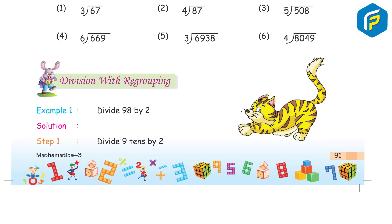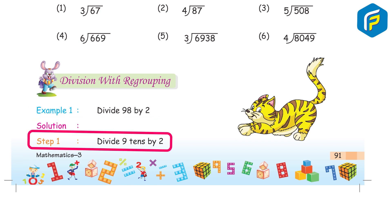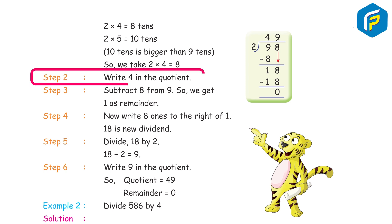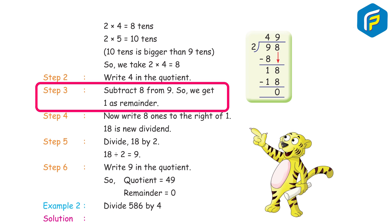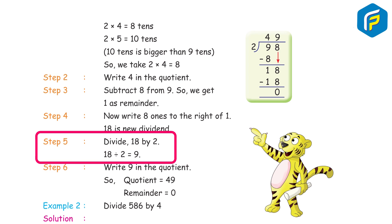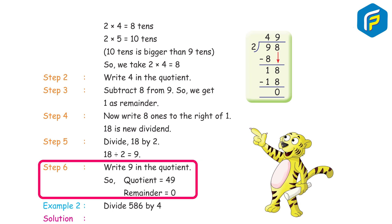Division with regrouping. Example 1: Divide 98 by 2. Step 1: Divide 9 tens by 2 — 2 × 4 = 8 tens; 2 × 5 = 10 tens which is bigger than 9 tens, so we take 2 × 4 = 8. Step 2: Write 4 in the quotient. Step 3: Subtract 8 from 9 — remainder is 1. Step 4: Bring down 8 ones to the right of 1; new dividend is 18. Step 5: Divide 18 by 2. Step 6: Write 9 in the quotient. So, quotient 49, remainder 0.